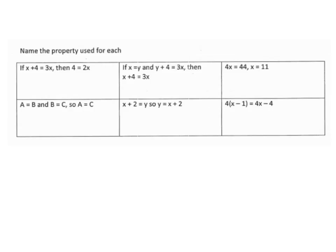Now we're going to try to figure out what properties we're using. So if I have x plus 4 equals 3x, how did I go from that to 4 equals 2x? Sometimes it helps to write it vertically. What happened was I subtracted x from each side, so this is called the subtraction property of equality.